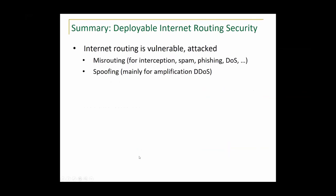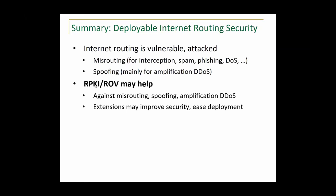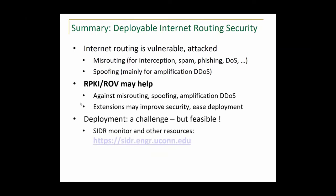To summarize: the internet is vulnerable and attacked both for misrouting — intercepting, spam, phishing, denial-of-service — and for spoofing, mainly used for amplification denial-of-service attacks. RPKI ROV may help against both misrouting and spoofing, and also against amplification denial-of-service. Extensions to RPKI may improve its security and make deployment easier. Deployment is a huge challenge, but we believe with these extensions RPKI ROV will become feasible. We encourage you to try our monitor for routing security at our website.